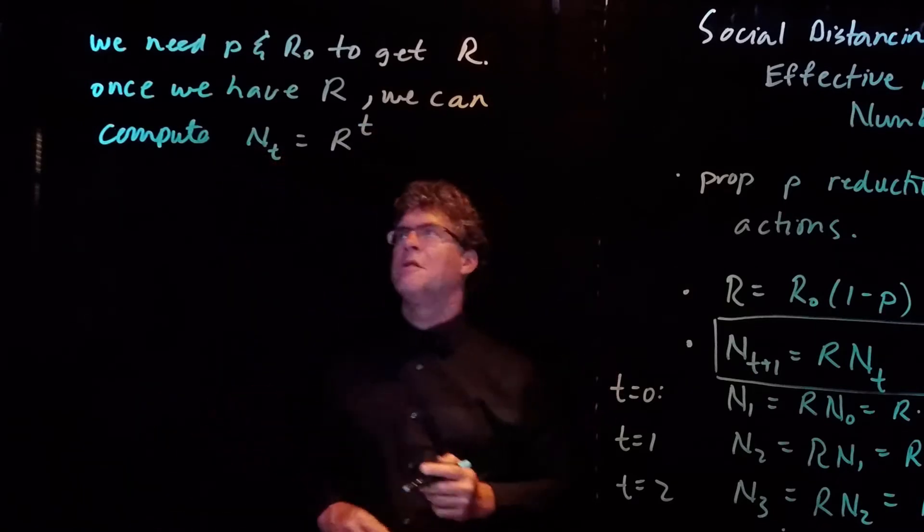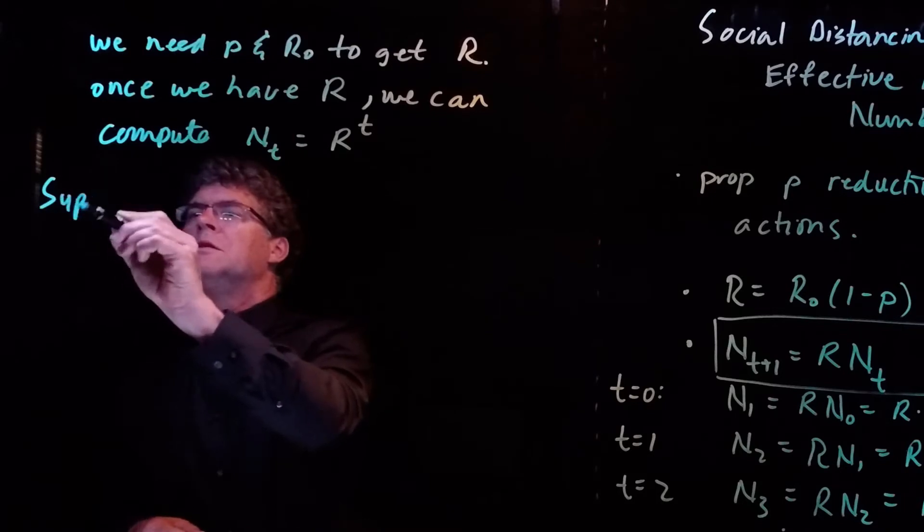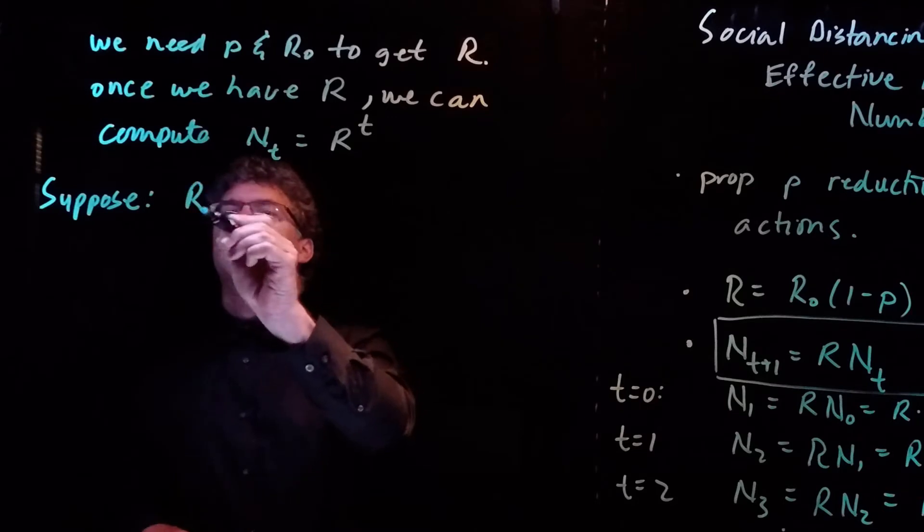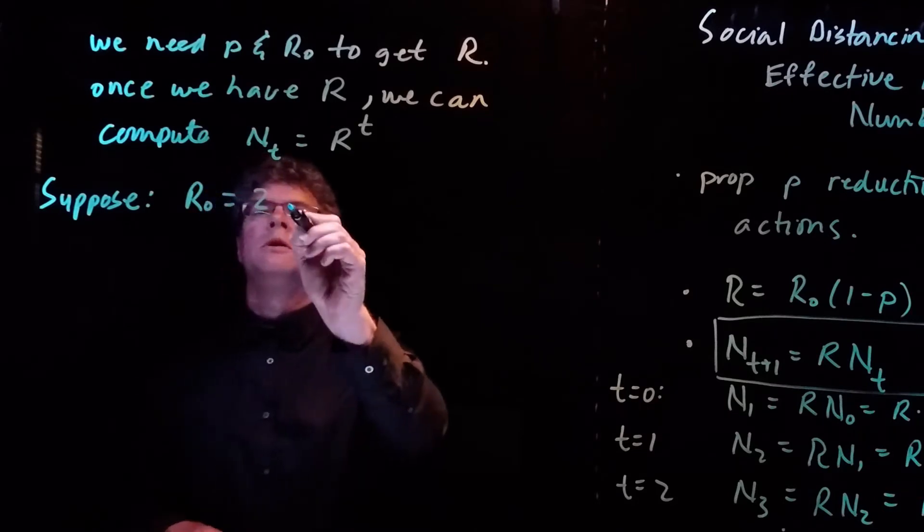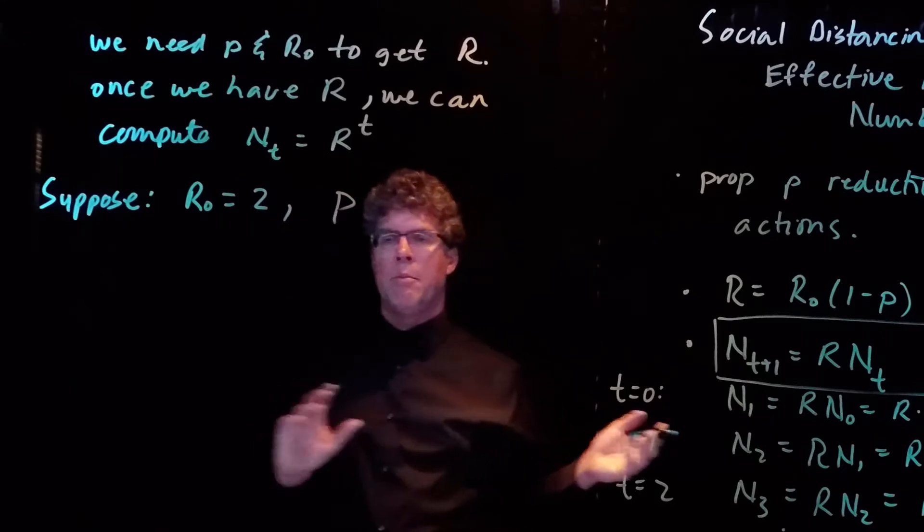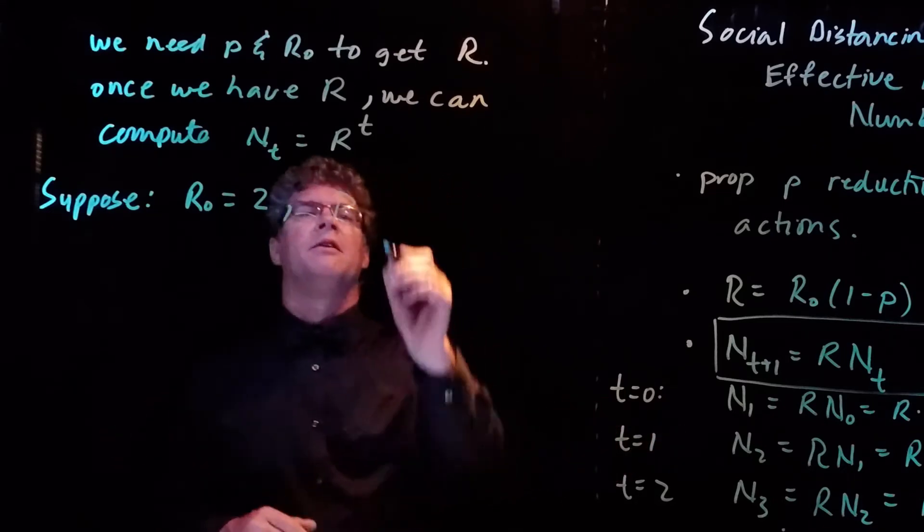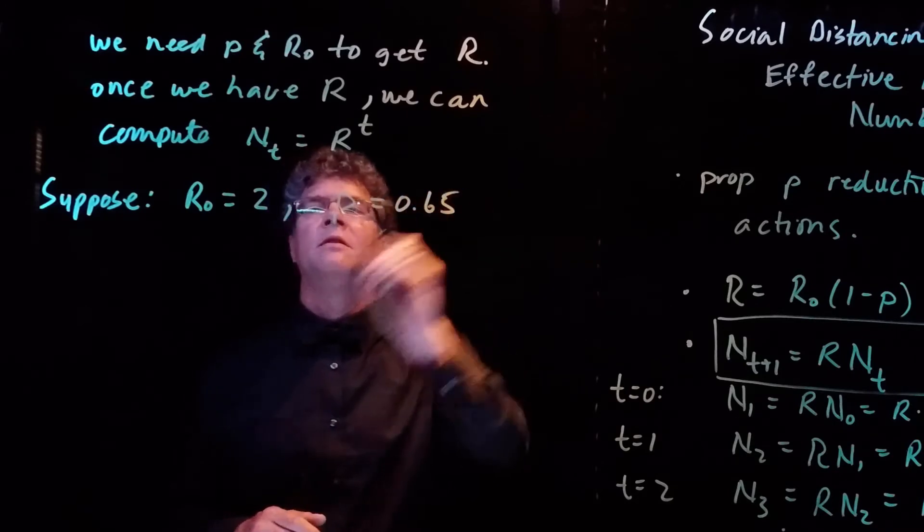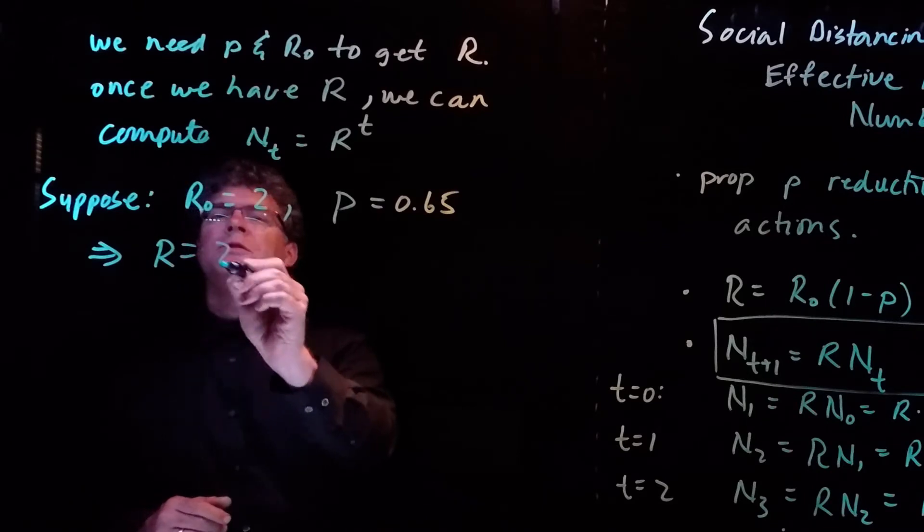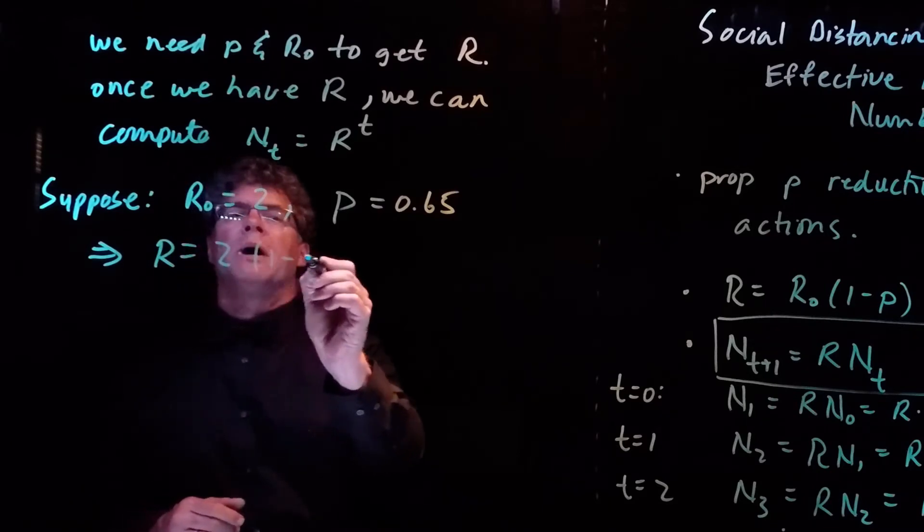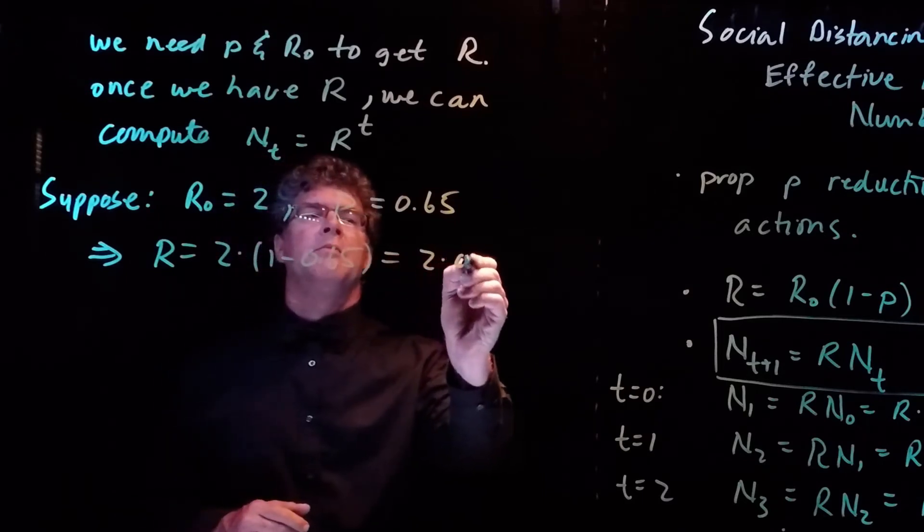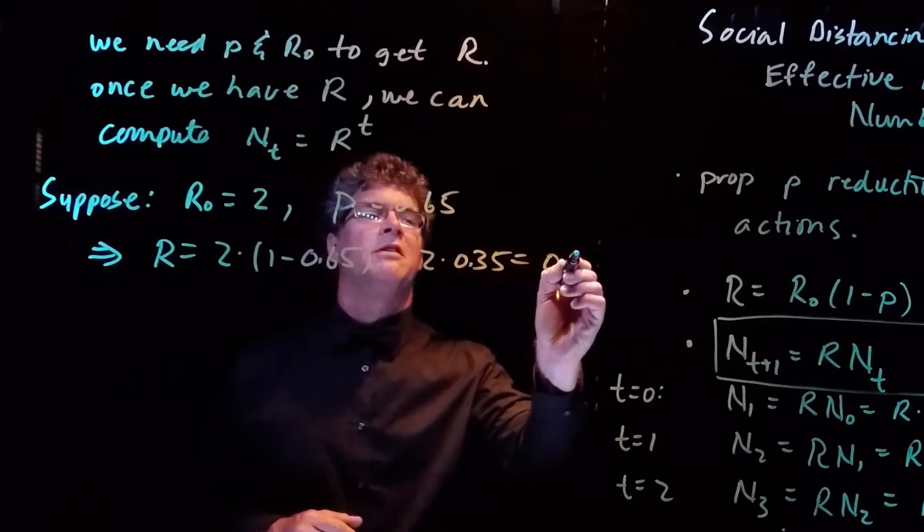So let's just consider an example. Suppose we have the COVID model, so R₀ is equal to 2. And suppose that our social distancing reduces our interactions by about 65%, so p is 0.65. Then this would tell us that R is 2 times 1 minus 0.65, which is 2 times 0.35, which is 0.7.